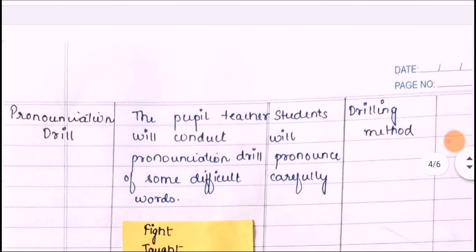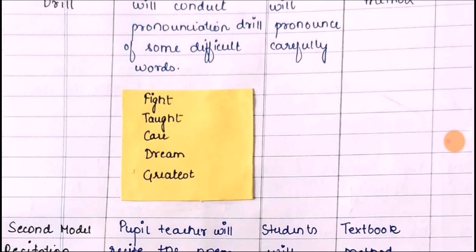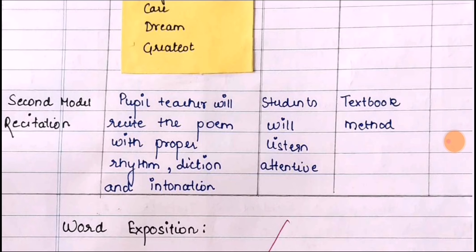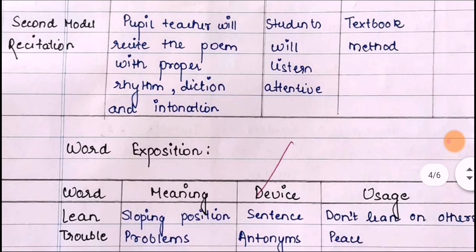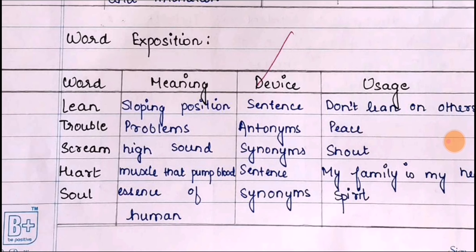The next step is pronunciation drill. The difficult words will be pronounced in class. The pupil teacher will conduct a pronunciation drill of some difficult words before the students. Students will pronounce carefully using the drilling method. Then after the second model citation, the teacher will recite the poem once again before the students with proper rhythm, rhyme, diction, and intonation.